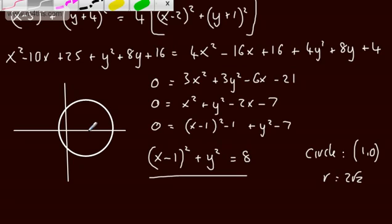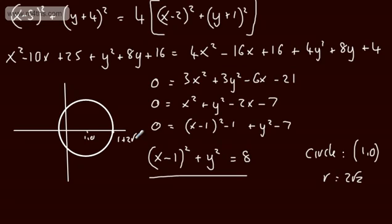What we've got then is this point, and this point is going to be 1 comma 0. So at this point, remember the radius is 2 root 2, so you might just want to say that that's 1 plus 2 root 2, and then you're going to have 1 minus 2 root 2. And you might just want to put a radius on, and this is going to be 2 root 2. So there we go, that is a sketch of the locus.